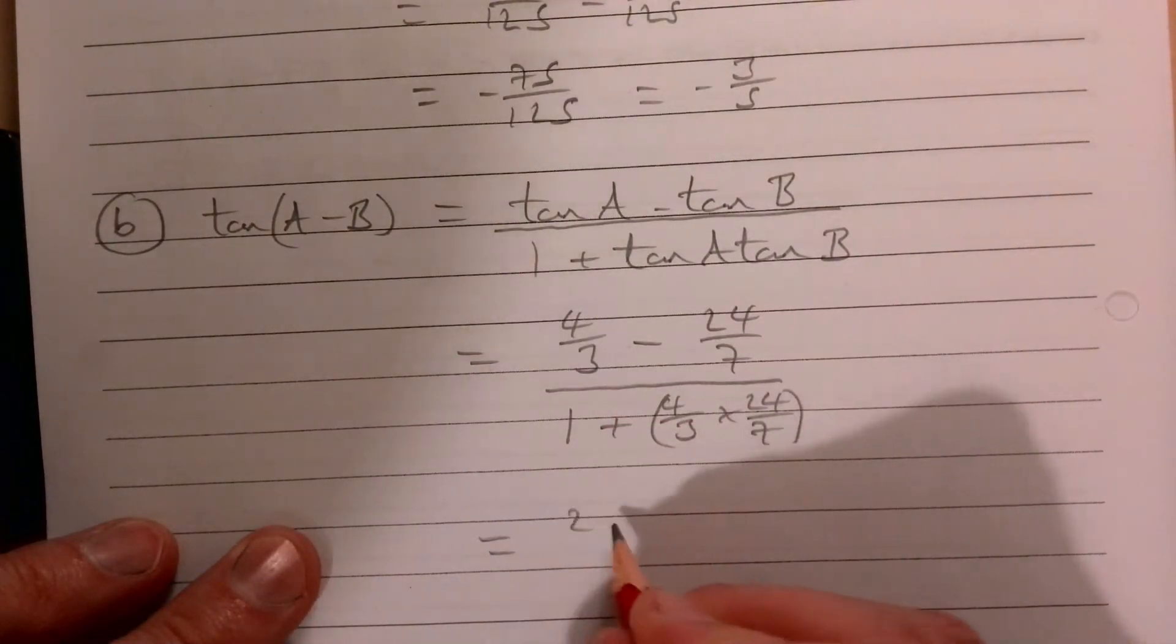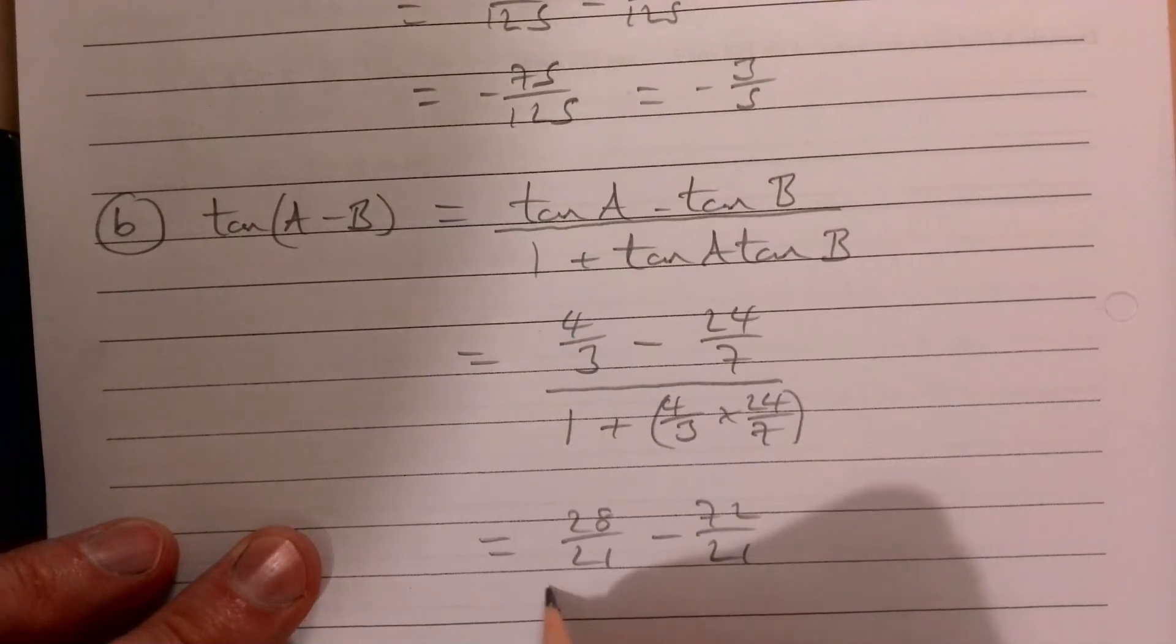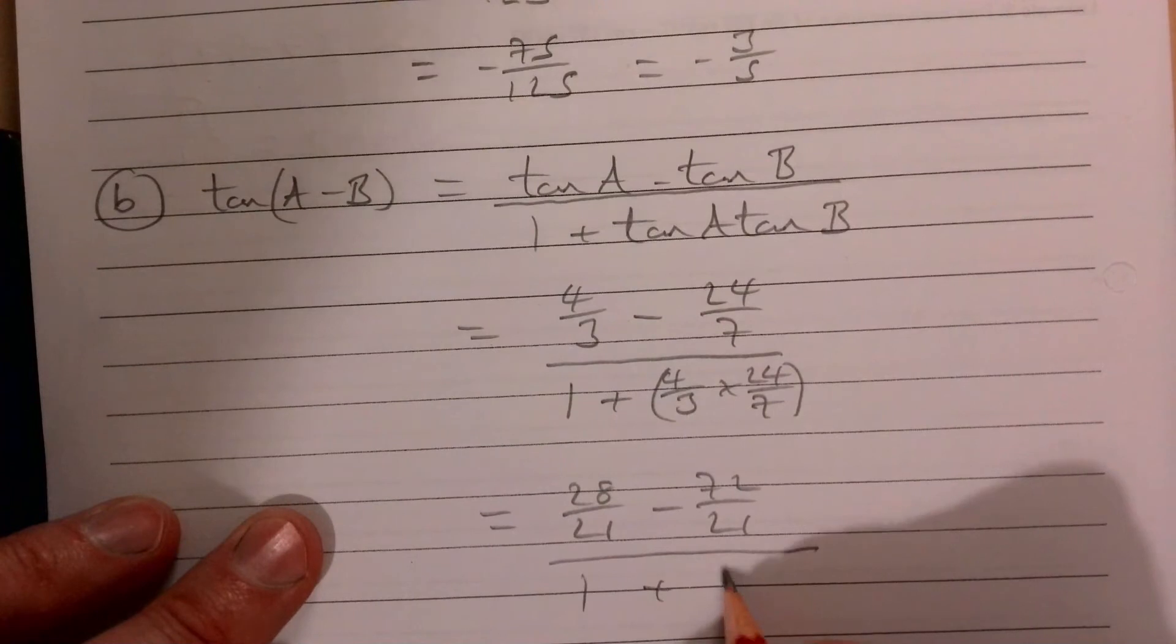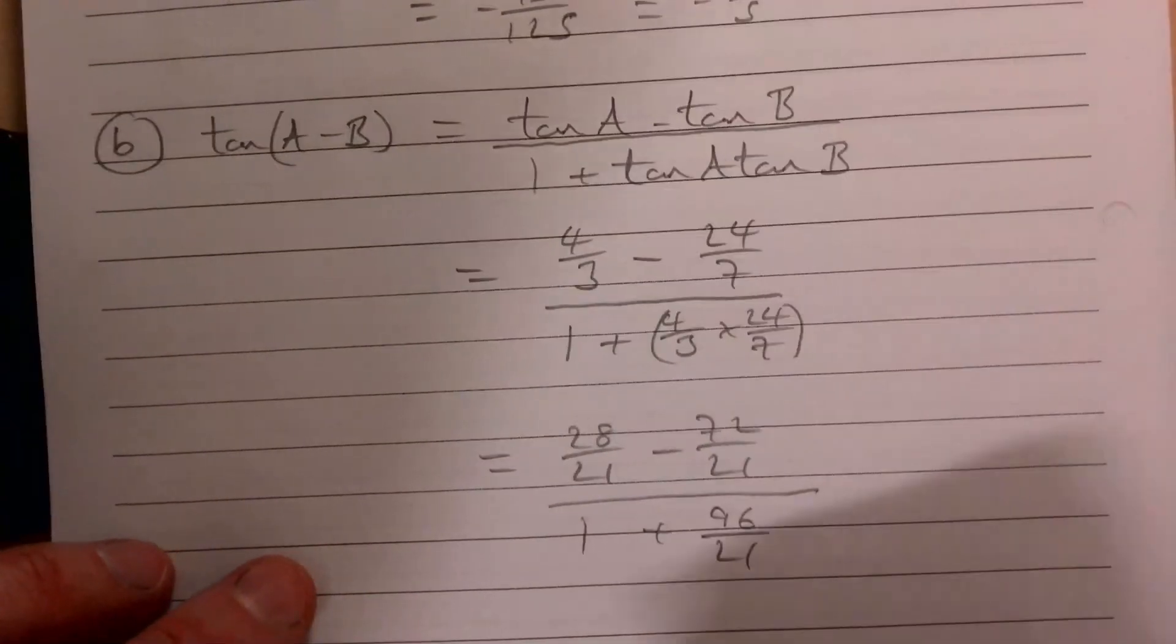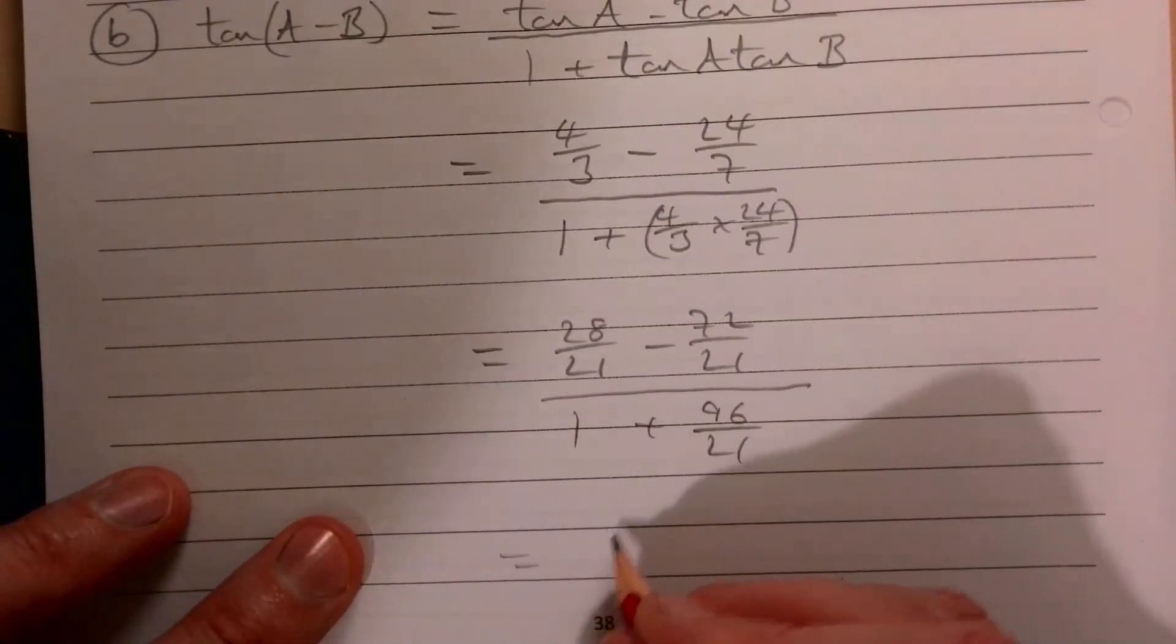A bit messier here but we should be okay. Put that over a common denominator, so 28/21 - 72/21, all over 1 + 96/21.